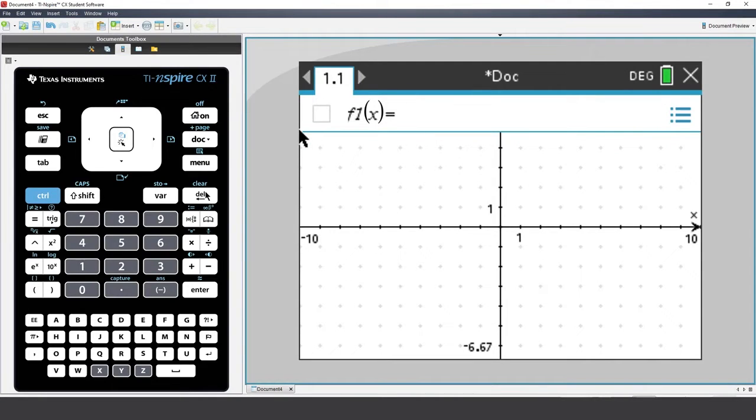Sliders are often used to explore how a parameter affects the shape of the graph. Let's start with the most common example, y equals mx plus c.